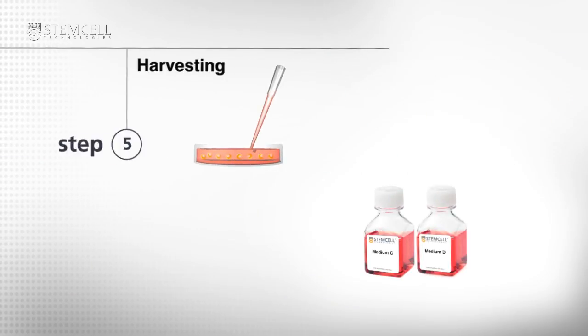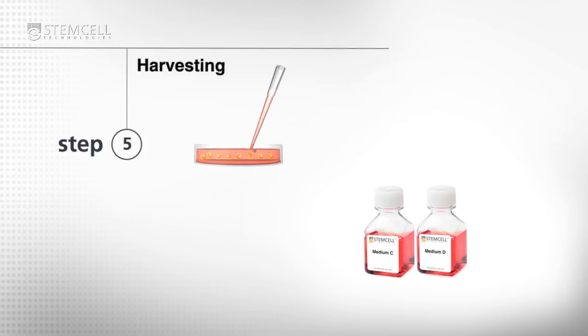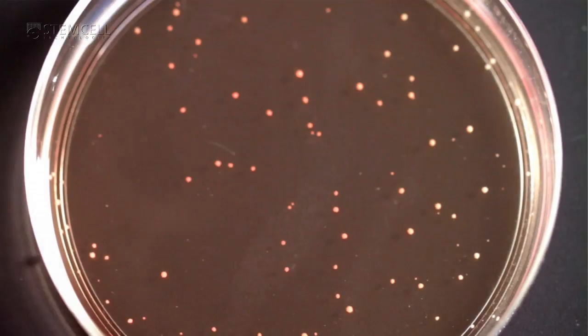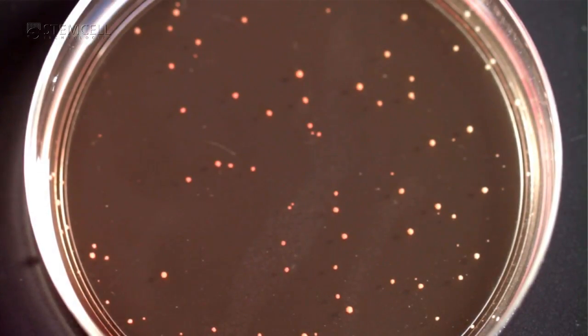Because medium D is semi-solid, each single hybridoma cell that has survived the hat selection has grown into a discrete colony that can be isolated separately.